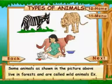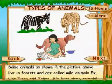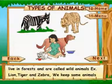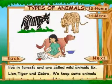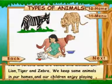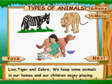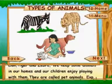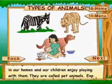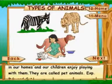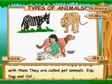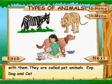Some animals, as shown in the picture above, live in forests and are called wild animals — example, lion, tiger and zebra. We keep some animals in our homes and children enjoy playing with them. They are called pet animals — example, dog and cat.